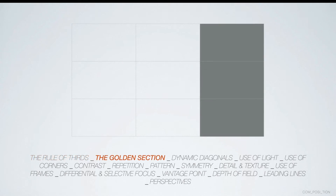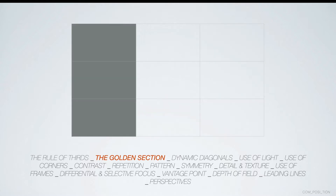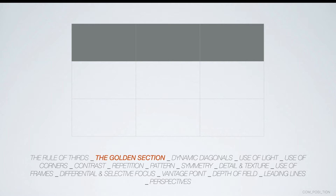The next one, which links to the idea of the rule of thirds, is what we call the golden section. The idea is that if your object of interest — whether it be a building, a fence, or a person — is in one third of the image, this creates an aesthetically pleasing composition. It can be on the right-hand side of the frame, the bottom, the left, or at the top. That's something to keep in mind when thinking about the photographs I'm going to be asking you to do over the next couple of days.